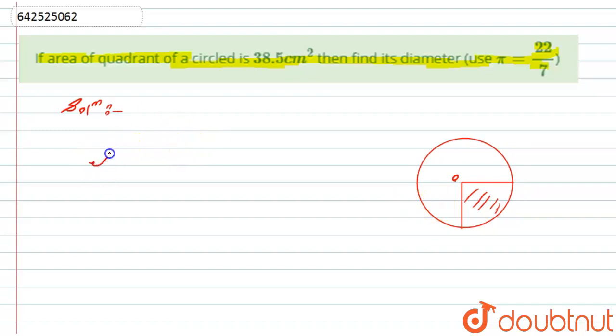So I can say that area of quadrant circle is equal to one by fourth of the area of the circle, that is πr².